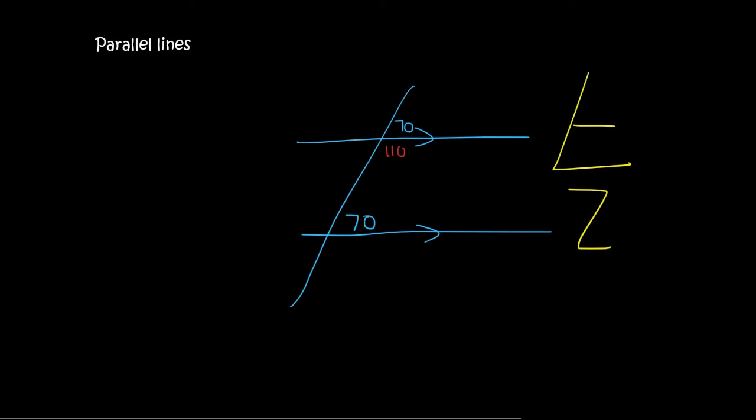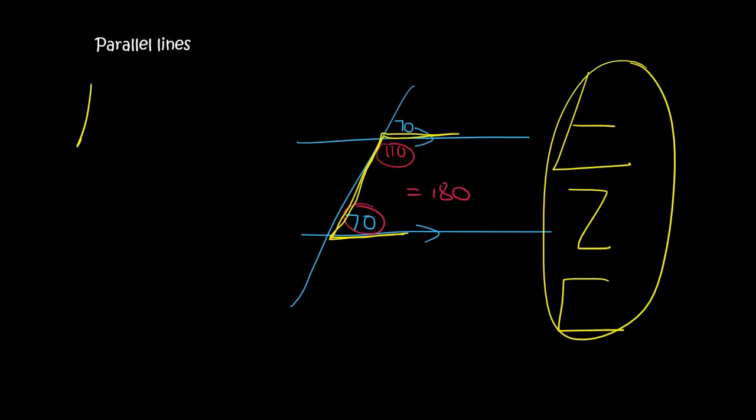So then something interesting that happens is that this angle plus this angle will always add up to 180. Now what shape are those ones forming? So these are the types of shapes you need to look for. You need to look for a shape with an F, a shape with a U, and a shape with a Z or an N.